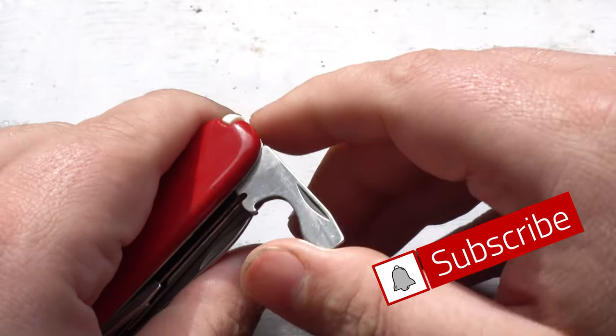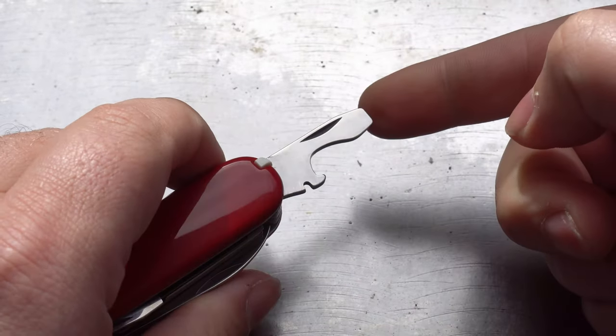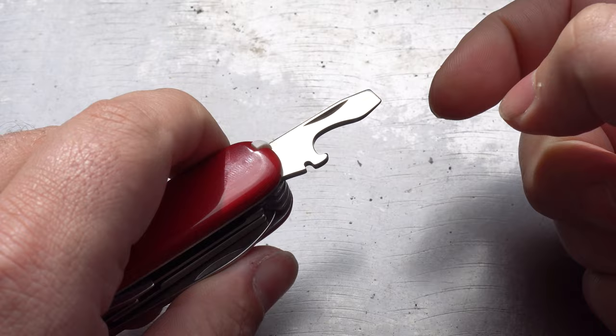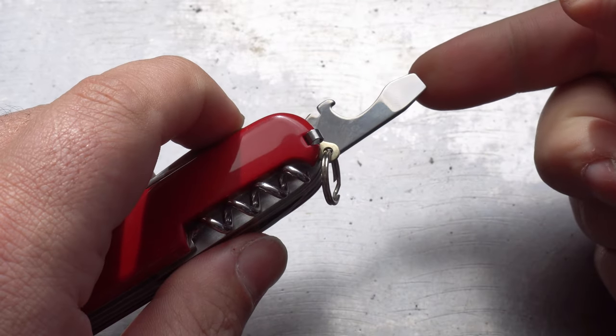Alright, let's get it open. So first of all we've got the cap lifter and large screwdriver. Looks familiar doesn't it? There's no real surprise that it's a direct copy from Victorinox.